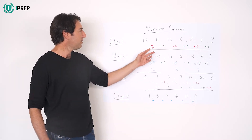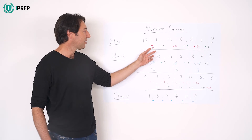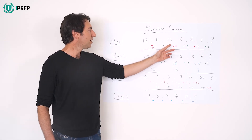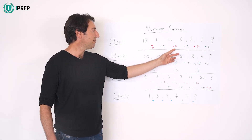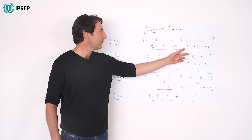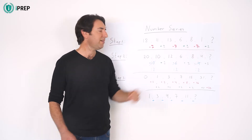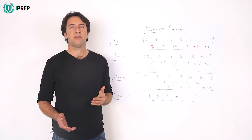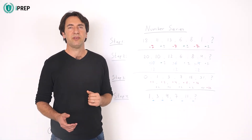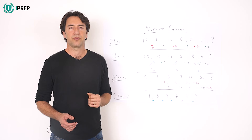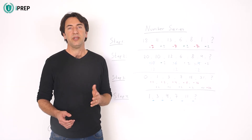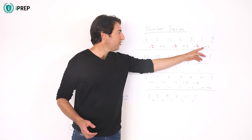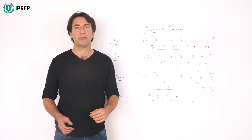The first difference is minus 7, then plus 2, minus 7, plus 2, minus 7. The next number probably follows the logical pattern of plus 2. Therefore, it is 3, as 1 plus 2 equals 3.